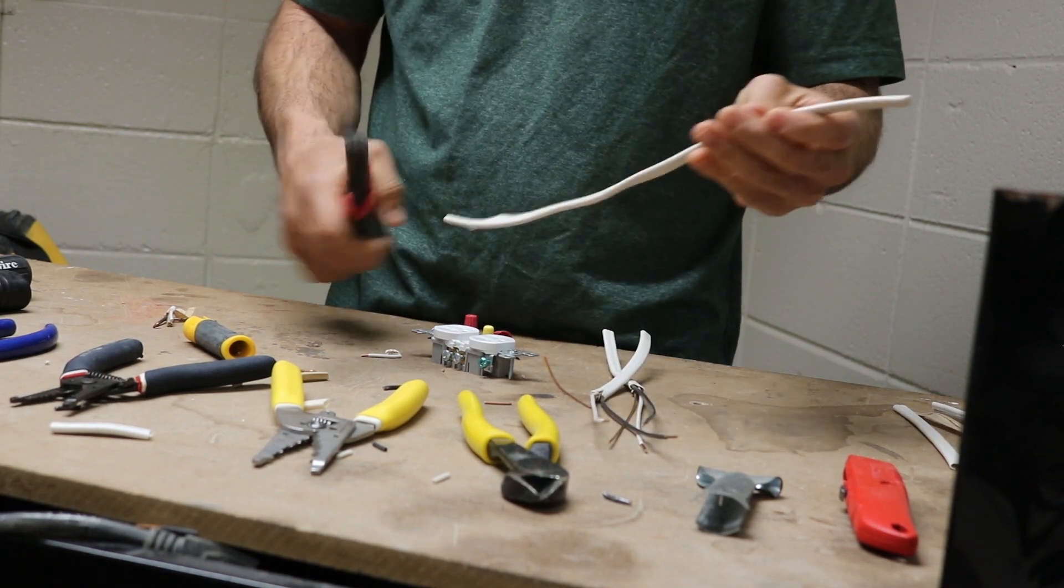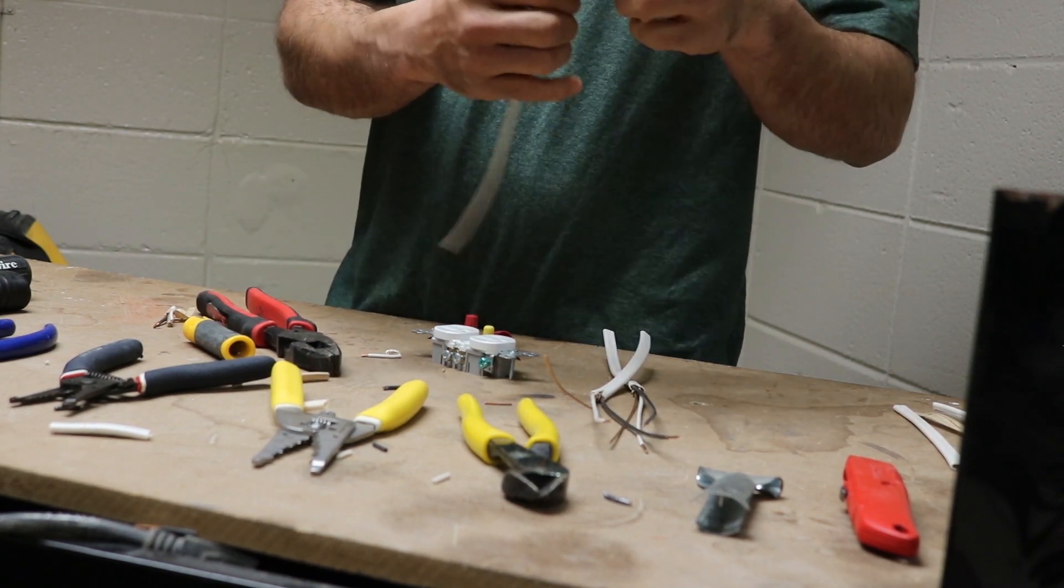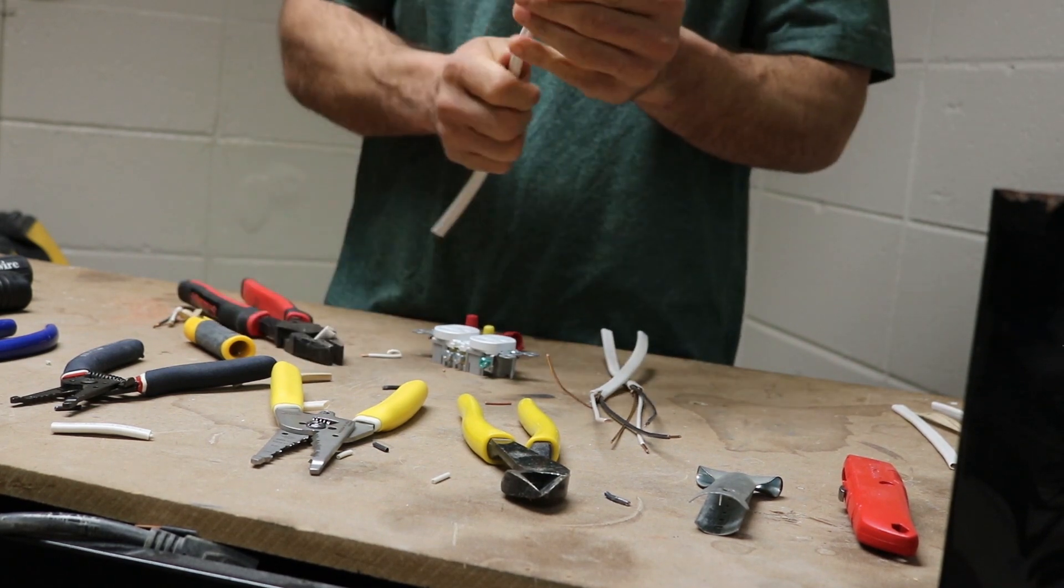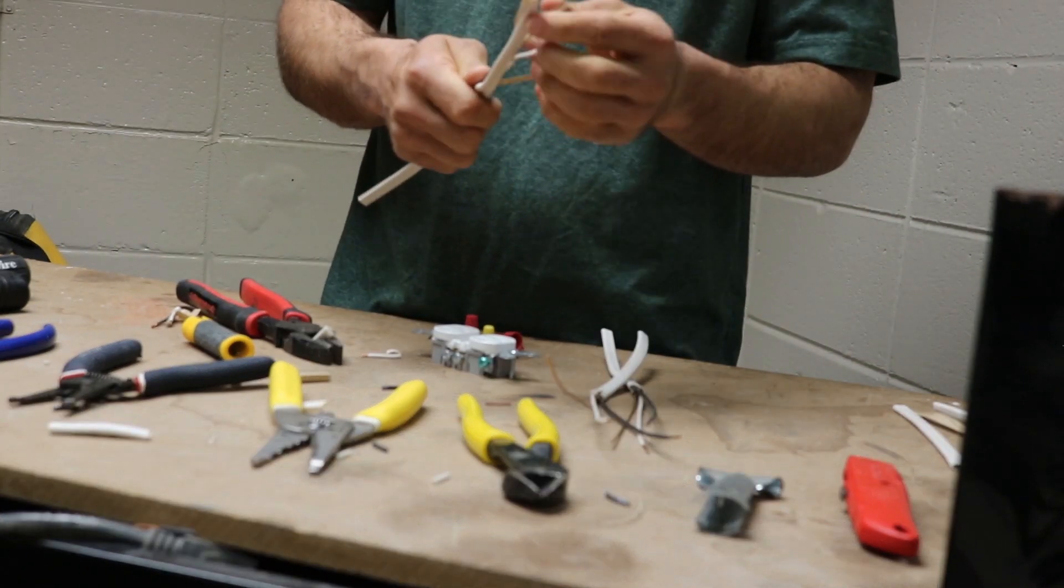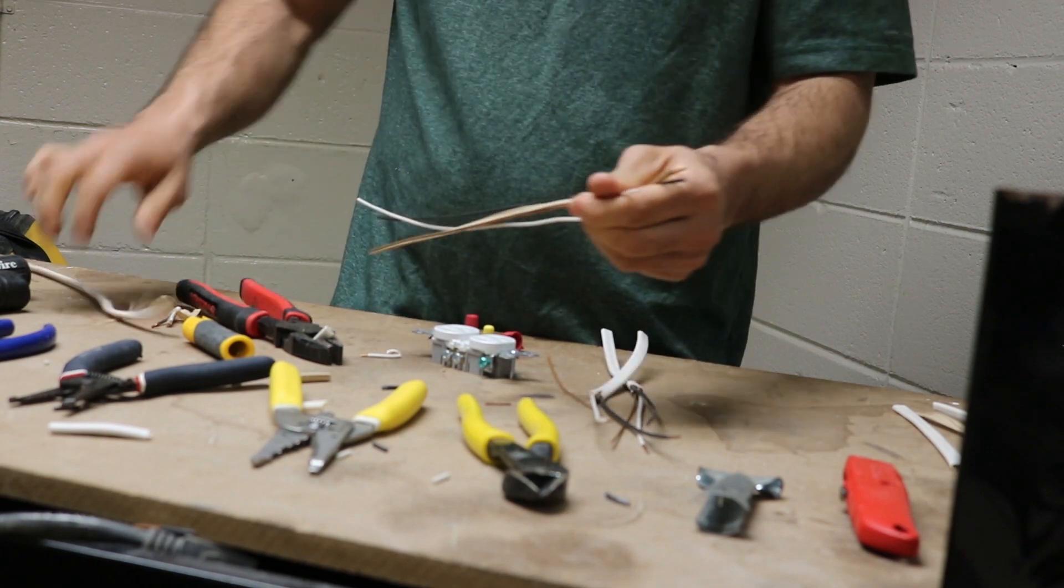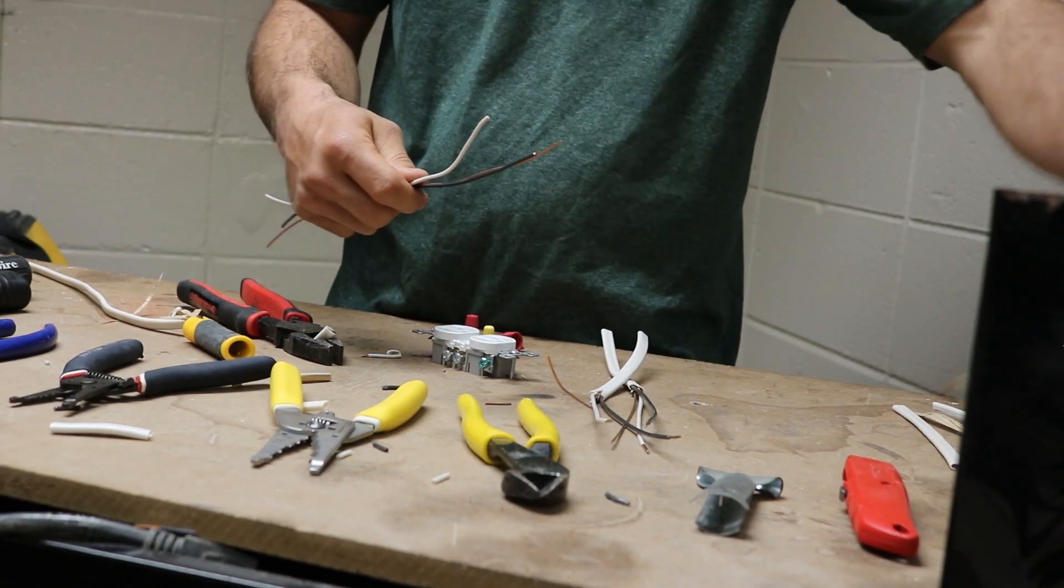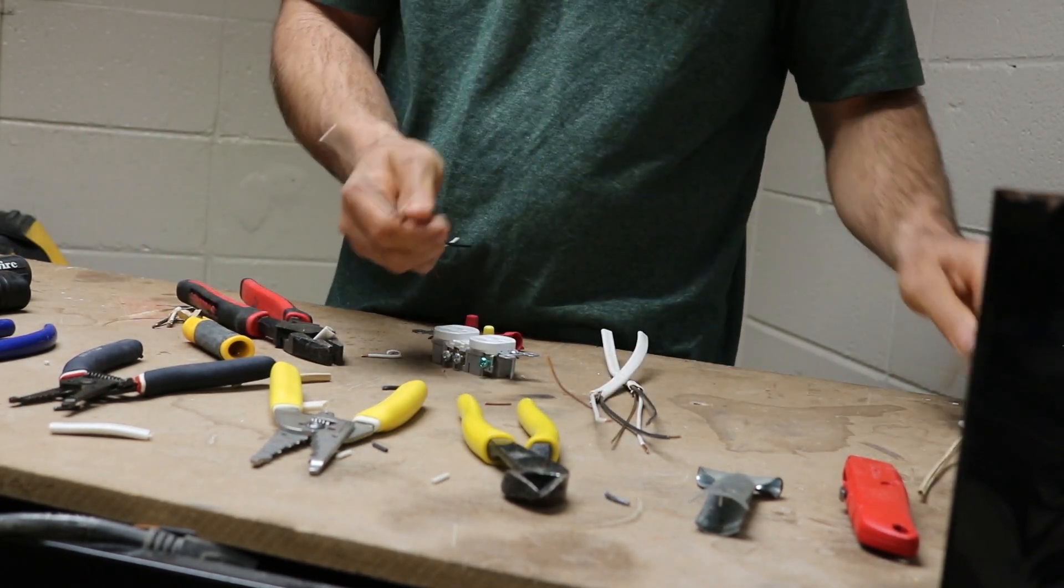Now you're going to do what they call making the jumper. So what you're going to do is you're going to take about six to eight inches of wire here. And these are going to be what you call your jumper wires.